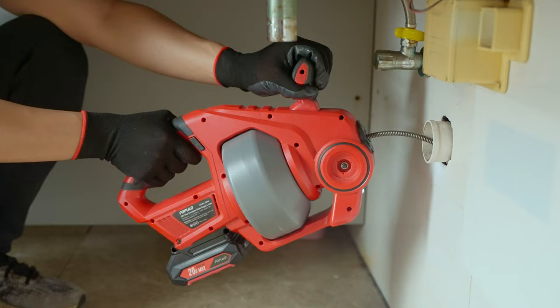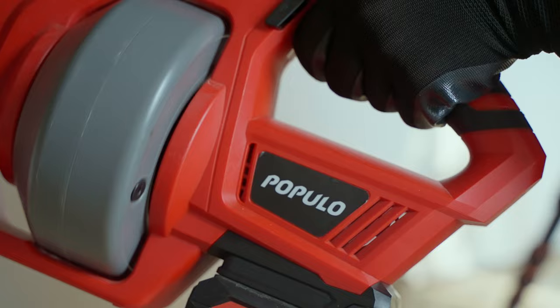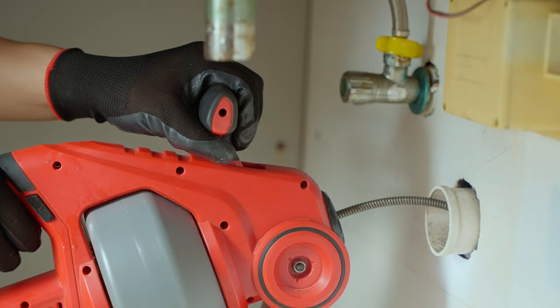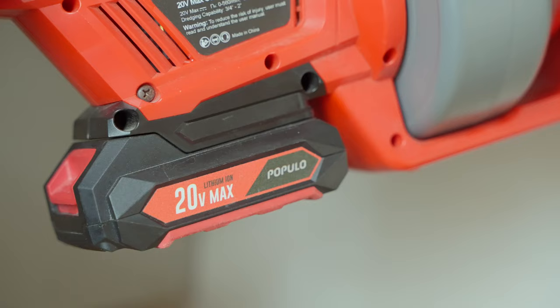Hold the drain auger within 4 inches of the drain or overflow and then turn on the switch. After feeding about 6 inches of cable into the drain, you may begin advancing the cable using the switch trigger or continue advancing it manually.